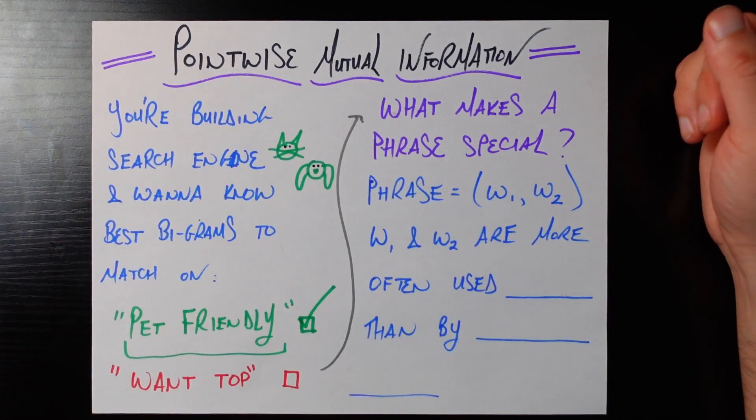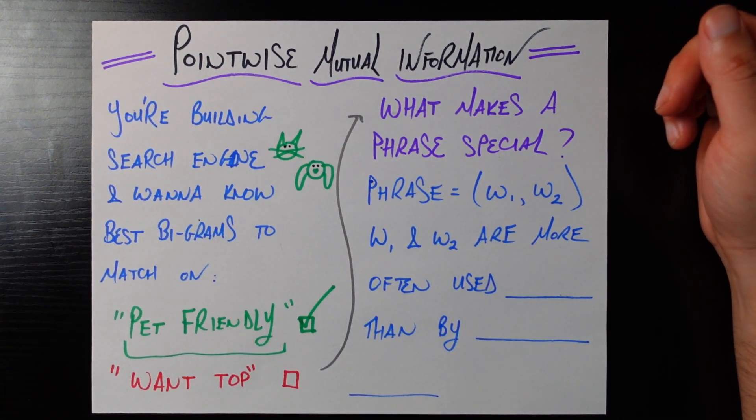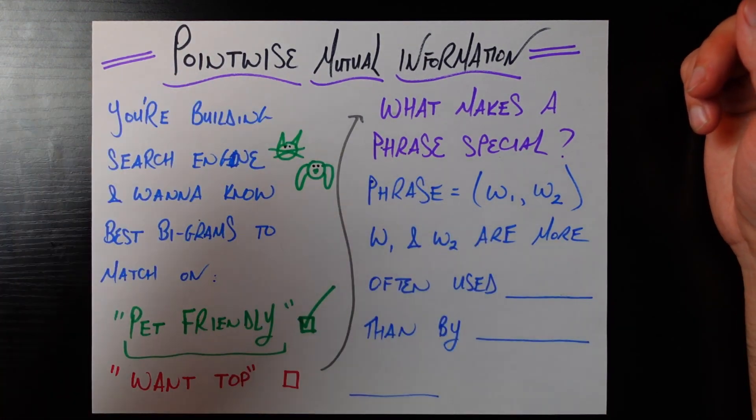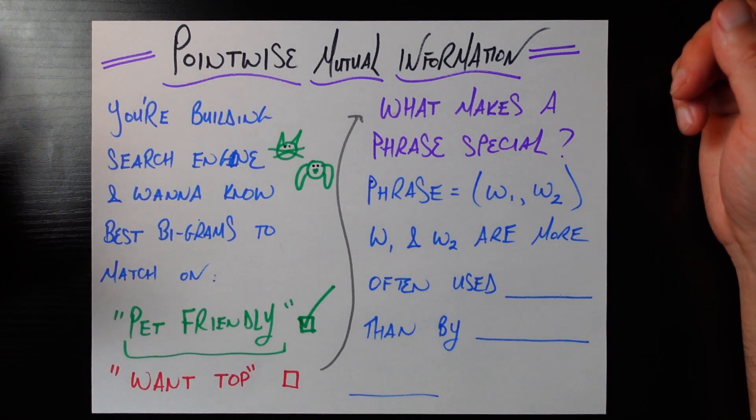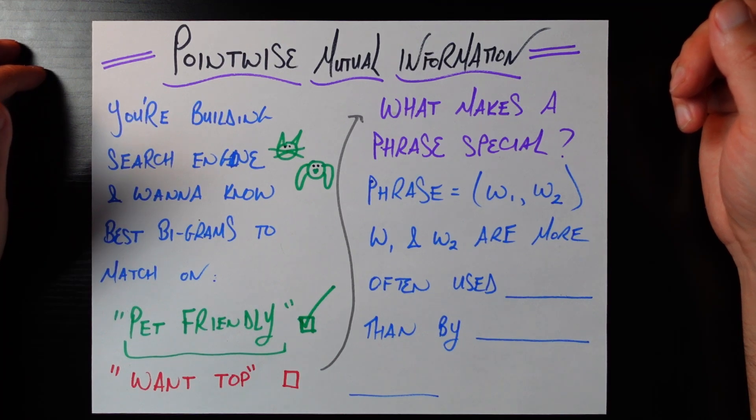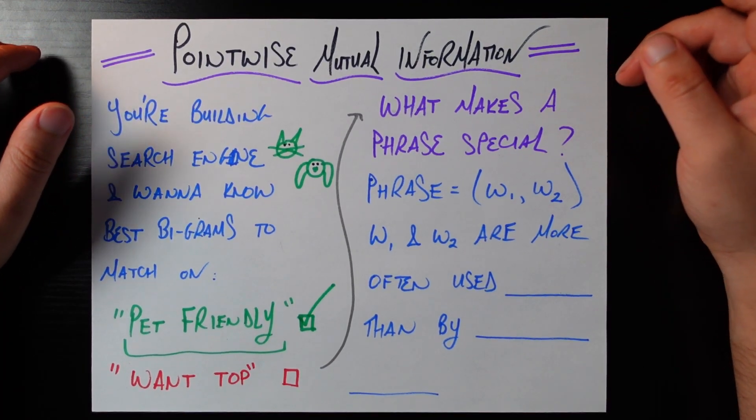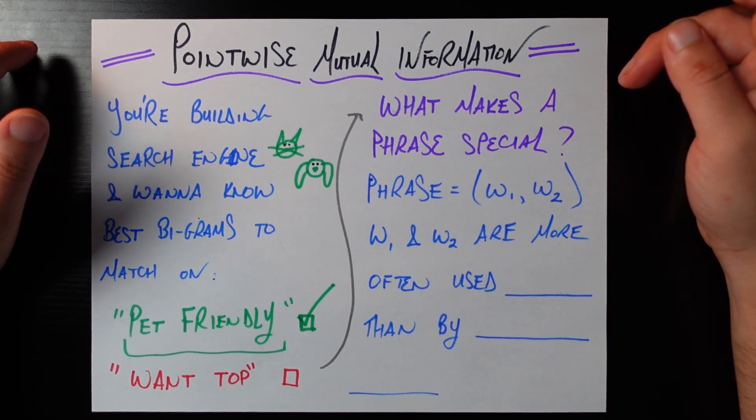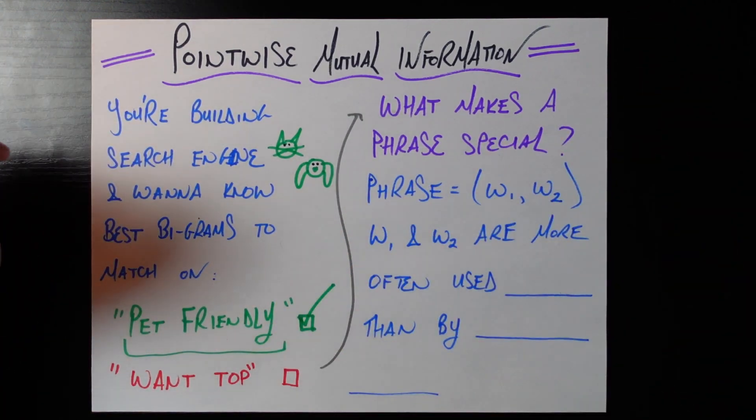Today's topic is called Pointwise Mutual Information and I'm going to motivate it as I usually do. So let's say you're building a search engine for animal lovers, so I got my little cat here, my little dog here, and one problem we run into is that you want to know which terms to use to index all the documents that are powering your search engine.